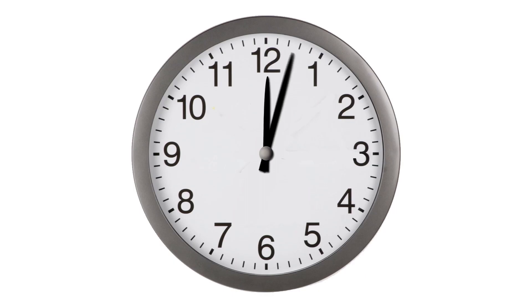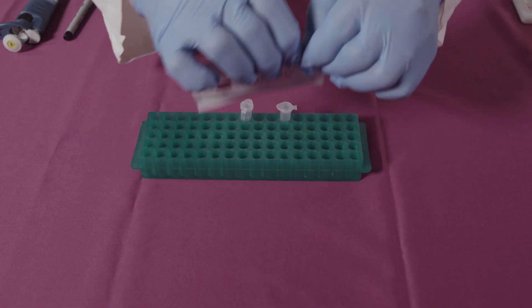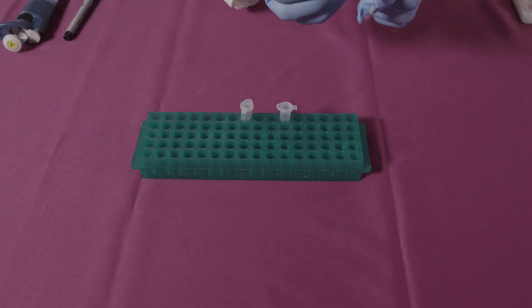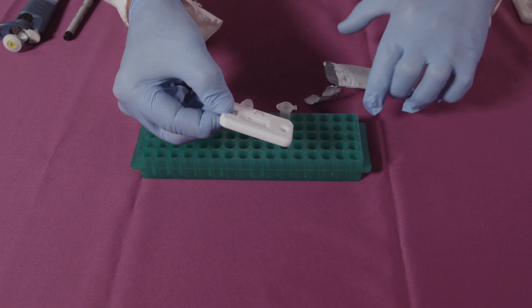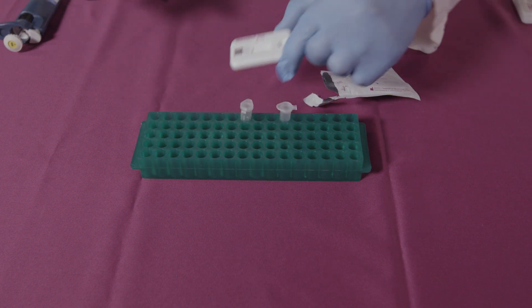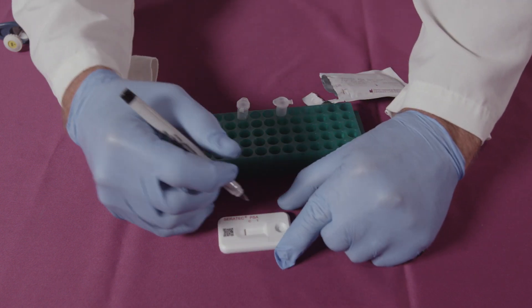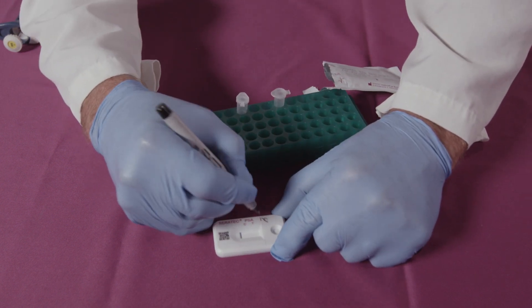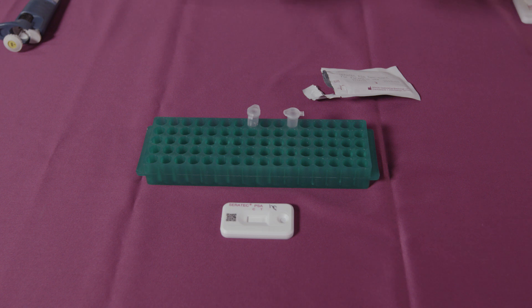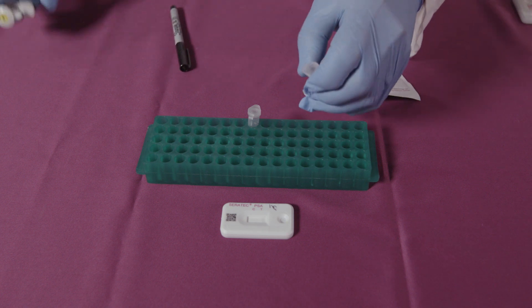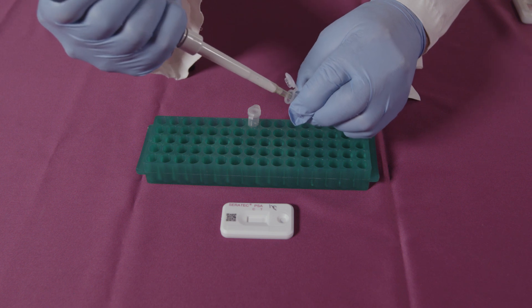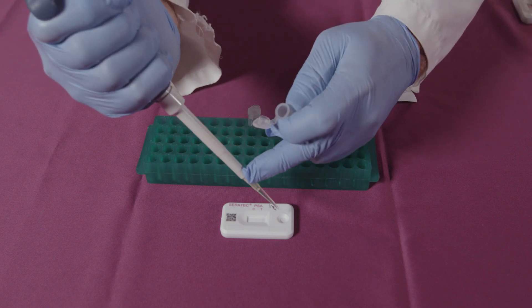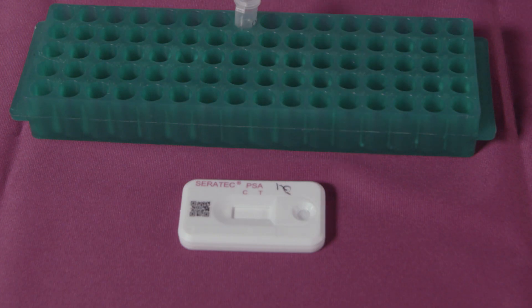To conduct a test, allow the sample to adjust to room temperature. Remove a cassette from the foil pouch and label it with an identifier. From the second microfuge tube, remove 120 microliters of sample and add to the hole in the cassette. You will see the sample begin to travel up the membrane.